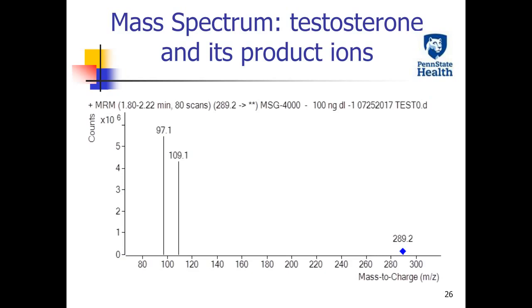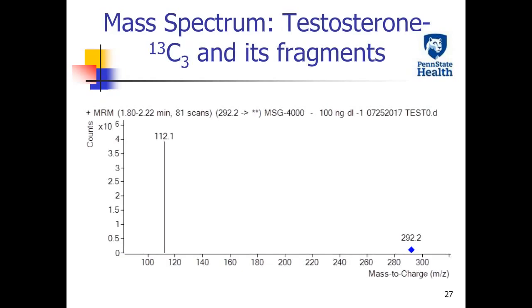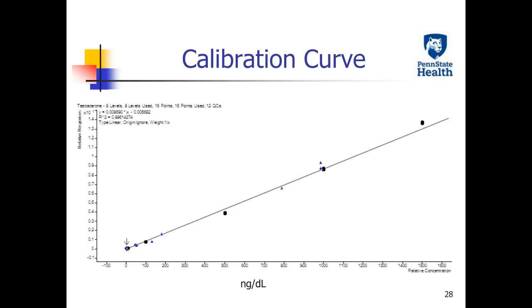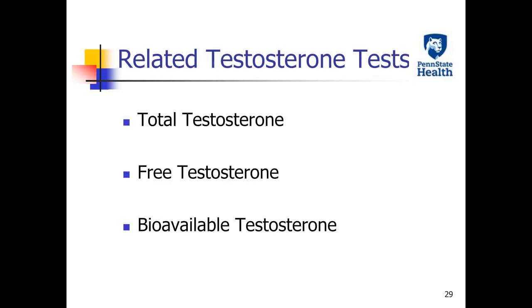Testosterone can be separated from other steroid hormones, as shown in the chromatogram. The measured mass-to-charge ratios in the mass spectrum of testosterone and its product ions are 289.2, 109.1, and 97.1, respectively. We use C13-labeled testosterone as the internal standard, with product ion mass-to-charge ratios of 292.2 and 112.1, respectively.